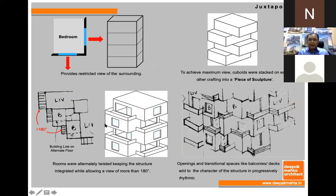To achieve maximum view and climatically give natural shading, the cuboids were juxtaposed so that the upper and lower floors were creating self-shading — to avoid the harsh weather of Chennai as well as the glare from the sea.